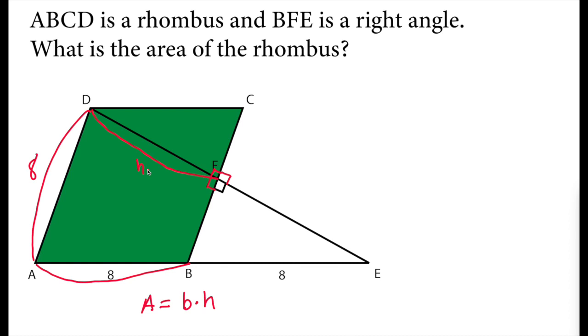So to find H, we will use two concepts in this question. First, similarity of triangles. We can see that we have a triangle here. BFE triangle and ADE triangle. So these triangles look similar. Why? Because they share an angle here.